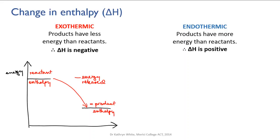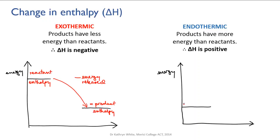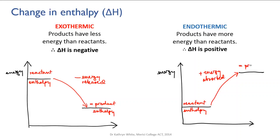A positive delta H means that energy was gained during the reaction, so this would be an endothermic reaction. You would have the reactant enthalpy plus the energy that gets absorbed equals the product enthalpy.